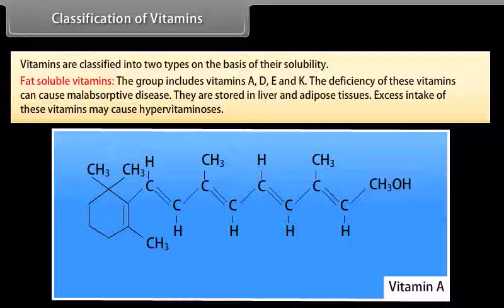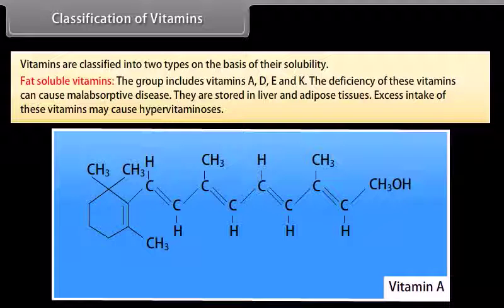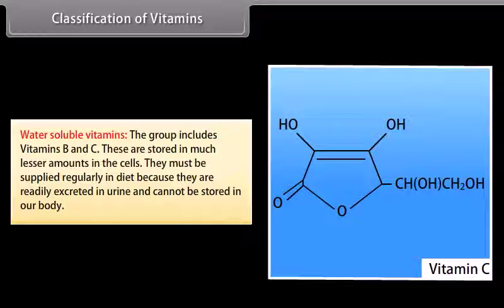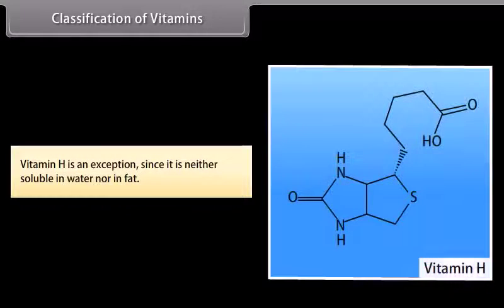Classification of Vitamins. Vitamins are classified into two types on the basis of their solubility. Fat-soluble vitamins: the group includes vitamins A, D, E and K. Deficiency of these vitamins can cause malabsorptive disease; they are stored in liver and adipose tissues, and excess intake may cause hypervitaminosis. Water-soluble vitamins: the group includes vitamins B and C. These are stored in much lesser amounts in the cells and must be supplied regularly in diet because they are readily excreted in urine and cannot be stored in the body. Vitamin H is an exception since it is neither soluble in water nor in fat.